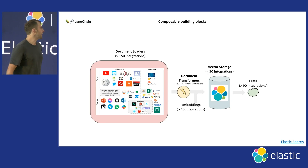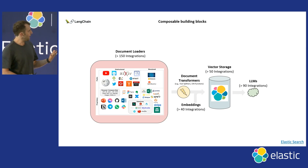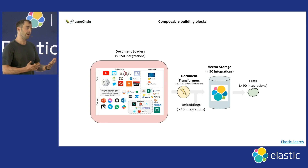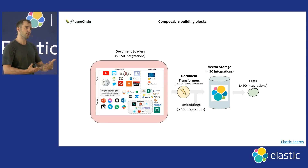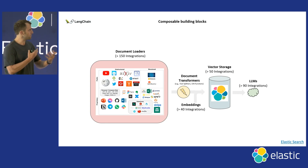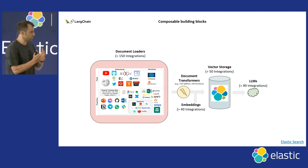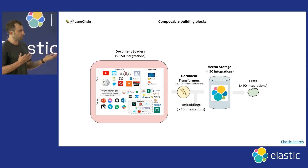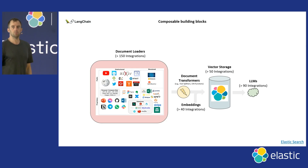If you have an app that uses Elastic, you can connect it to over 90 different LLMs very easily with LangChain — it's essentially a single line of code change. You can just swap in and out different models.